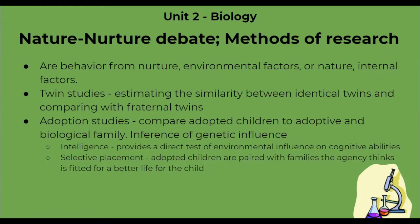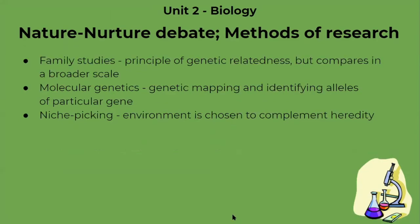Selective placement is when adopted children are paired with families the agency thinks are best fitted for the child. Next, we have family studies. This uses the principle of genetic relatedness but compares on a broader scale — so instead of just siblings, participants could be parents, grandparents, aunts, cousins, and other family.